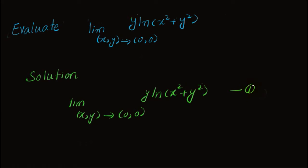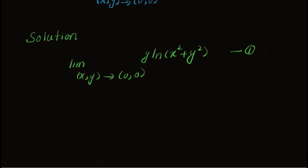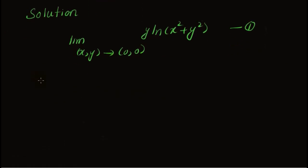In polar coordinates, x is equal to r cos theta, and y is equal to r sin theta. So let x equal r cos theta and y equal r sin theta.